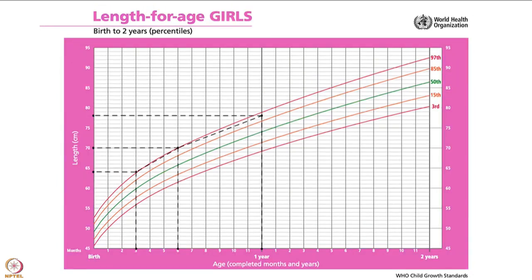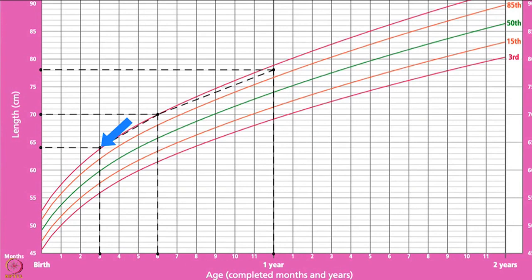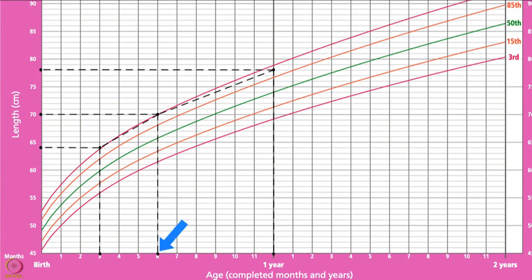Let us use an example to understand plotting on this chart. This graph shows Anita's length for age plotted 3 times over a few months. At the first point, Anita was 3 months of age and 64 centimetres in length. At the second point, she was 70 centimetres in length at 6 months of age. Finally, at the third point, she was 78 centimetres in length at 1 year of age.